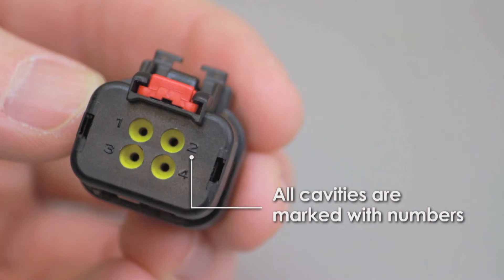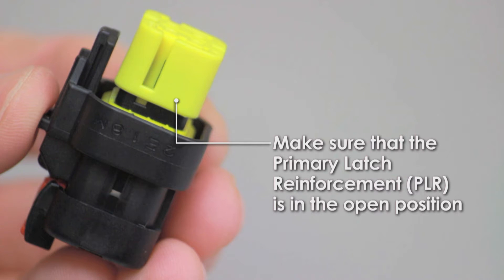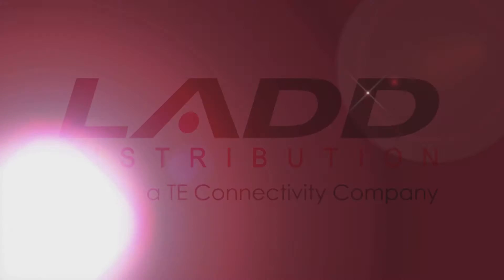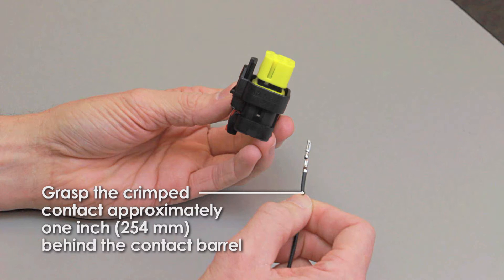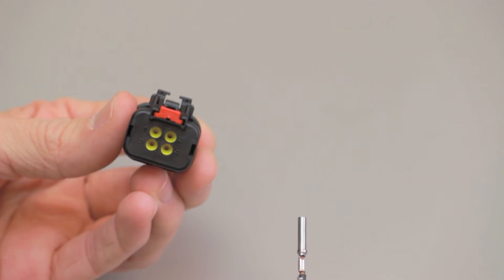All cavities are marked with numbers. Check that the primary latch reinforcement is in the open position. Grasp the crimped contact approximately 1 inch behind the contact barrel. Hold the connector with the rear seal facing you.